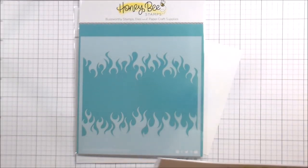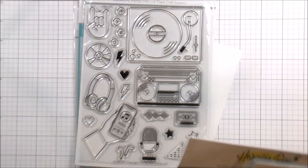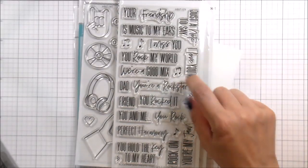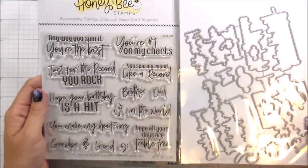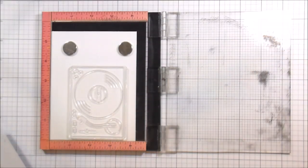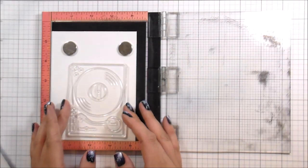So I'm using lots of stuff. This is the Woodgrain background stamp, the flame stencil, the good mix stamp set, and then the rock star sentiments, and then this is the for the record sentiments, and then their dies.